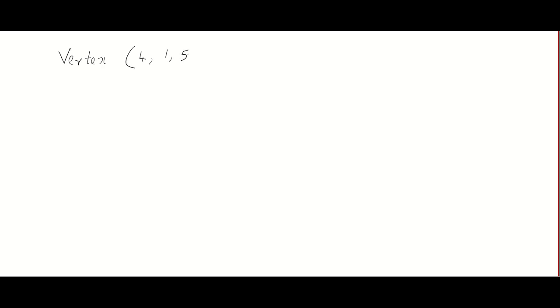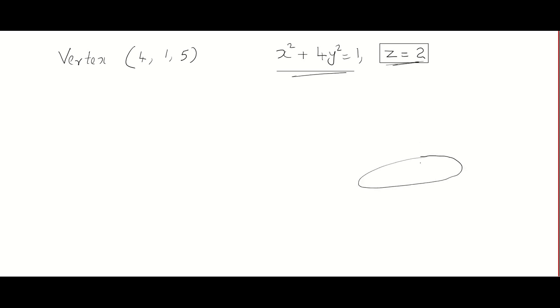Let's start with the first question: Find the equation of a cone with vertex (4, 1, 5) and guiding curve (base) the ellipse x² + 4y² = 1, z = 2. We draw a rough picture. The base is an ellipse not in the xy-plane but in a plane parallel to it, two units high. We have an ellipse as the base, the vertex with coordinates (4, 1, 5), and a generating line connecting them.